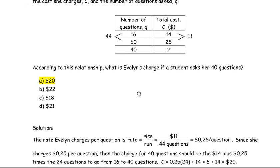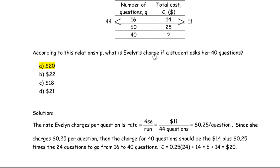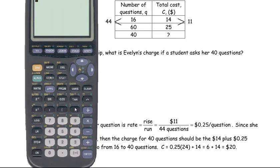First, we're going to find the rate. Remember, rate is rise over run, and we have two complete ordered pairs here. From 16 to 60, that's 44 questions—60 minus 16. So there's a difference of 44 questions from here to here. Those 44 questions cost $11, since the difference between $14 and $25 is $11.